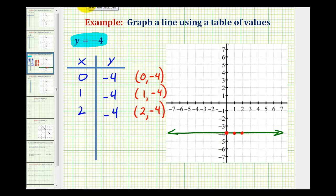If we do this enough times, we'll recognize that when we have a line in the form y equals some constant C, it's a horizontal line intersecting the y-axis at C. Until then, we can always rely on a table of values to graph a line containing one variable. I hope this was helpful.